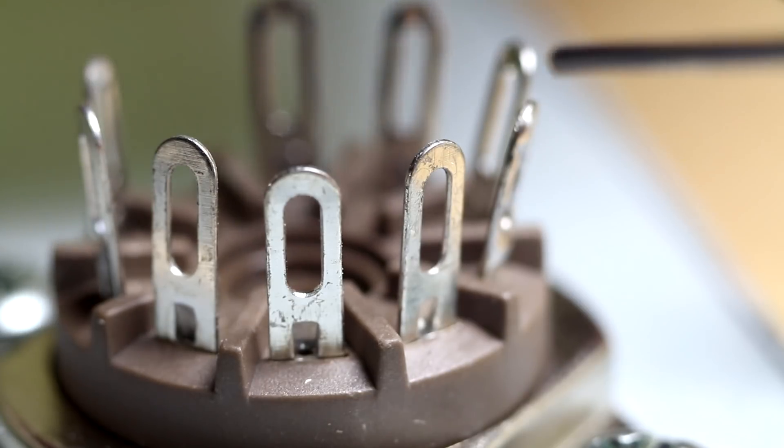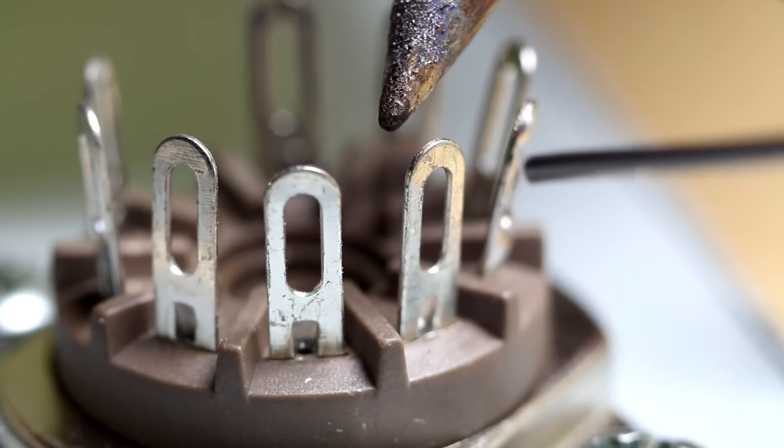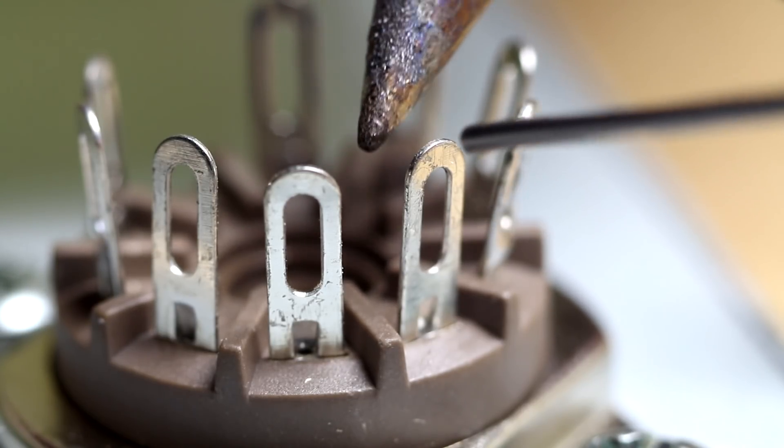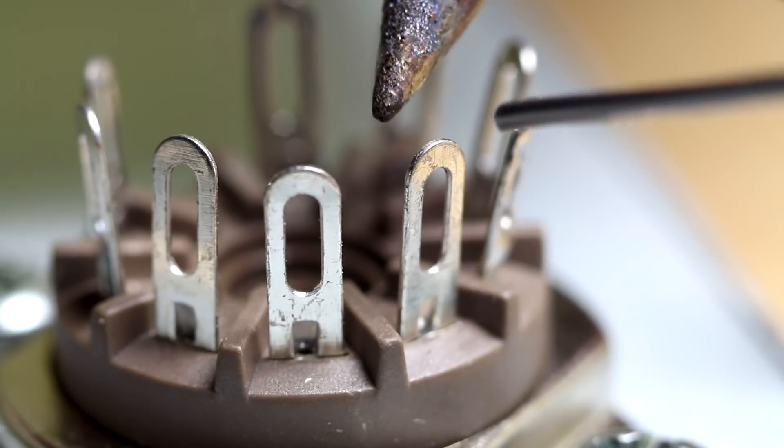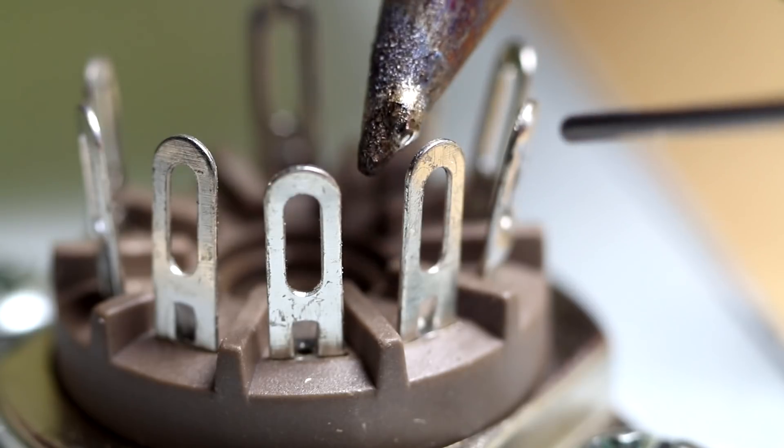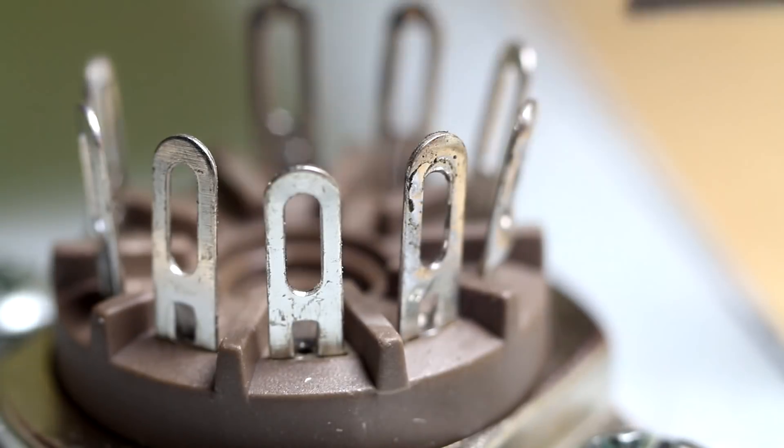Solder runs toward the heat, so what we want to do is have the soldering iron at the back of the lug here. We'll feed the solder in from the front side and we just want to create a heat bridge. Put a little blob of solder on the tip there, then we can just touch that to the lug and then feed some solder in.